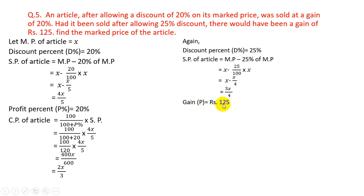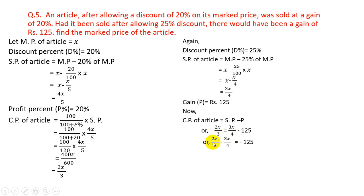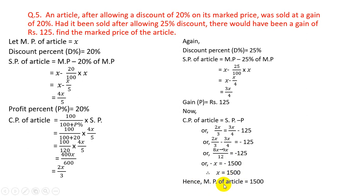Gain = Rs.125, so CP = SP − profit gives 2X/3 = 3X/4 − 125. Rearranging: 2X/3 − 3X/4 = −125. Taking LCM of 12: (8X − 9X)/12 = −125, so −X/12 = −125, giving X = 1500. Hence MP of the article = Rs.1500 is the answer.